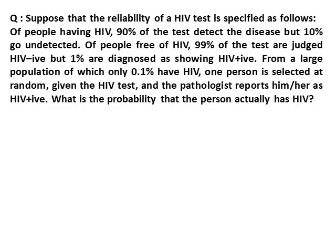Students, read this statement carefully. In this question, the reliability of an HIV test is specified. If a person is suffering from HIV, there is a 90% chance the test will detect the disease and a 10% chance it will not. If a person is free of HIV, there is a 99% chance the test will show HIV negative and a 1% chance it will diagnose HIV positive even though the person is free of HIV. Also, from a large population, only 0.1% of persons have HIV.